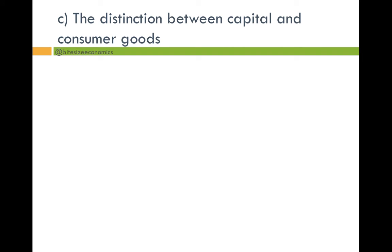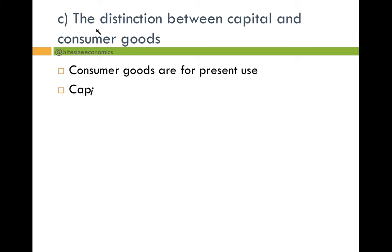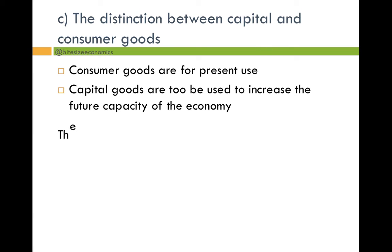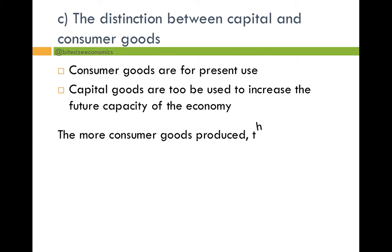Now looking at the distinction between capital and consumer goods. Consumer goods are for present use, whereas capital goods — such as machinery and tools — are used to increase the future capacity of the economy, so they're used for investment. The more consumer goods we produce, the higher the opportunity cost. More consumer goods now means people are happier and richer in the short run, but the more capital goods we produce now, the more both types of goods can be produced in the future — so people have less goods now but more for future generations.